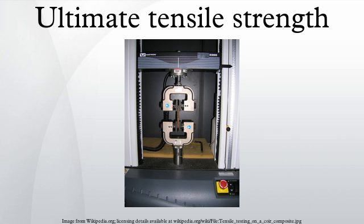Tensile strengths are rarely used in the design of ductile members, but they are important in brittle members. They are tabulated for common materials such as alloys, composite materials, ceramics, plastics, and wood.